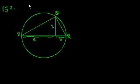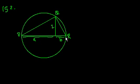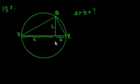Arc PQR is a semicircle. The question asks: what is the length of diameter PR? So they essentially want to know what A plus B equals — that's PR.